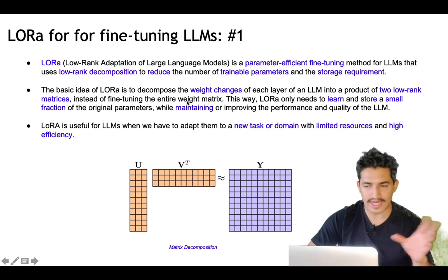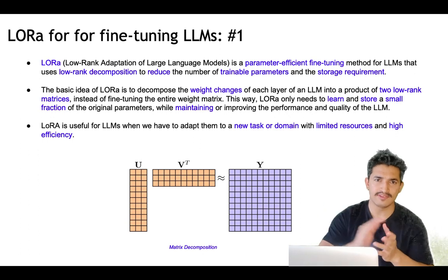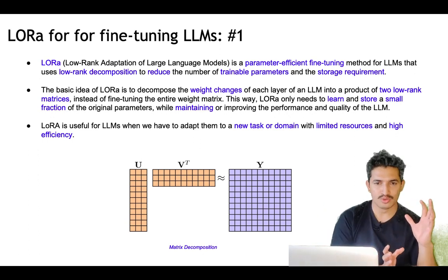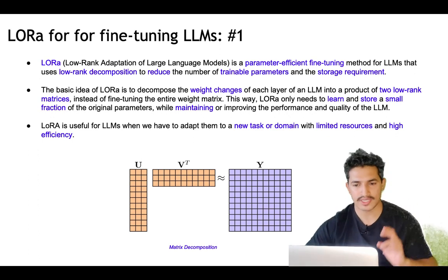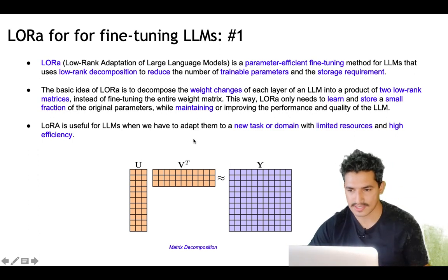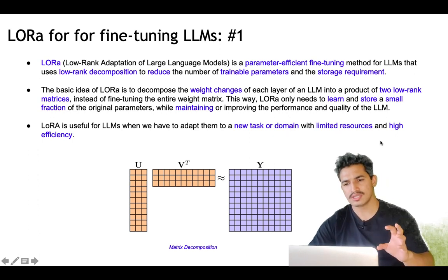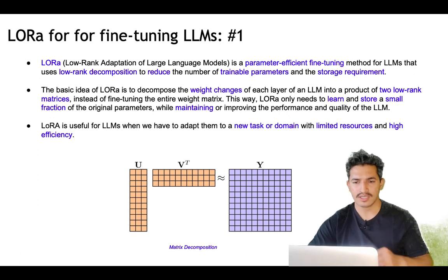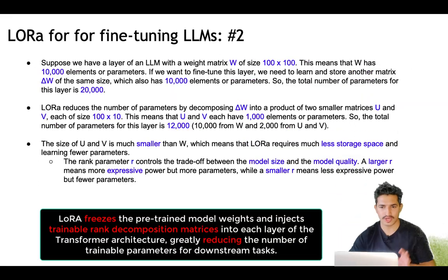Instead of fine-tuning the entire weight matrix, LoRA only needs to learn and store a small set of parameters while maintaining or improving performance. The number of trainable parameters is reduced by a lot using matrix decomposition. As soon as a new task or domain appears with limited resources, we can still fine-tune efficiently because of LoRA — Low-Rank Adaptation of large language models.